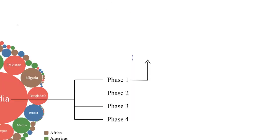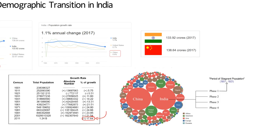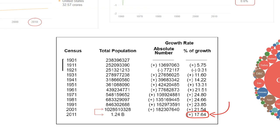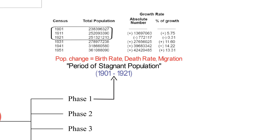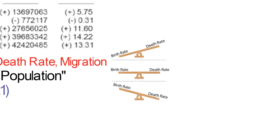Let's look at the first phase. It is from 1901 to 1921. This period is called the period of stagnant population. In this period, the population growth rate was very low — the population was more or less stagnant. There are 3 main causes of population change: birth rate, death rate, and migration. Always think in terms of these 3 causes.